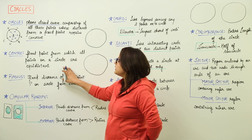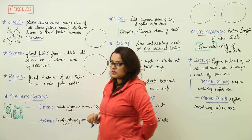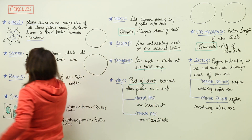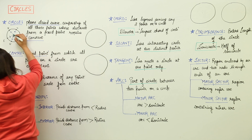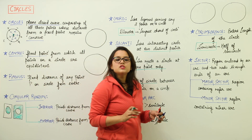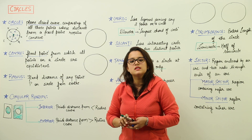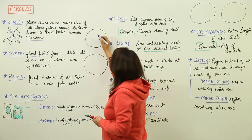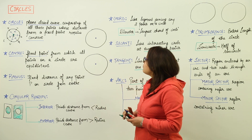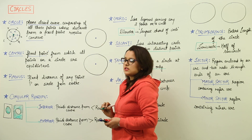Now, what is centre? Centre is a fixed point on the circle from which all the points on the circle are equidistant. Here the point that I took was A. So this point over here, from which all the points on the circle are equidistant, that fixed point is known as the centre. We can have centres for these circles also — this is the centre, from which all the points on the circle are going to be equidistant.